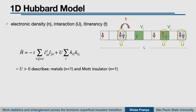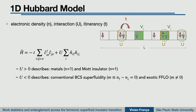Although it's quite basic, you can describe a lot of physics already with this simple model. For example, if you go to the limit where you have repulsive interaction, you can describe metals if you have filling smaller than one, and you can also describe Mott insulators at this limit. If instead of repulsive interaction you consider attractive, you could describe BCS superconductivity. And if you add some imbalance — some magnetization in your system — you could also describe, at least qualitatively, exotic superconductivity properties like an FFLO state.